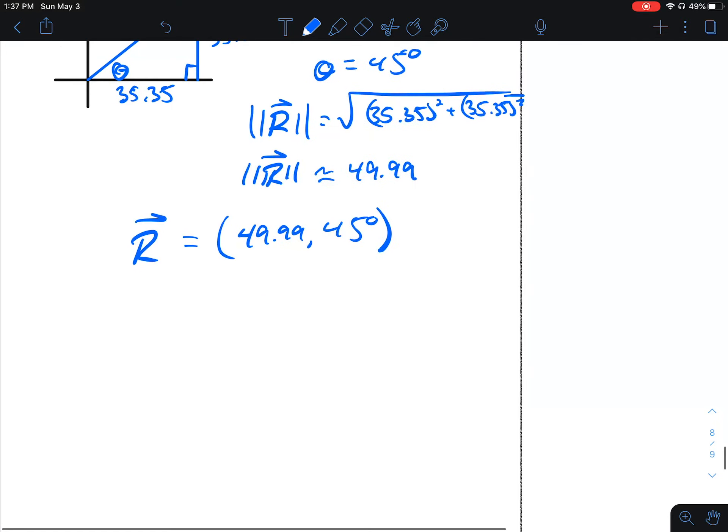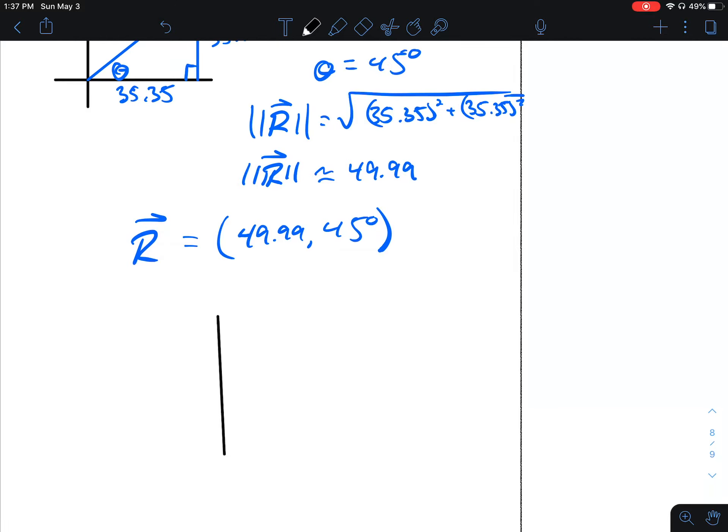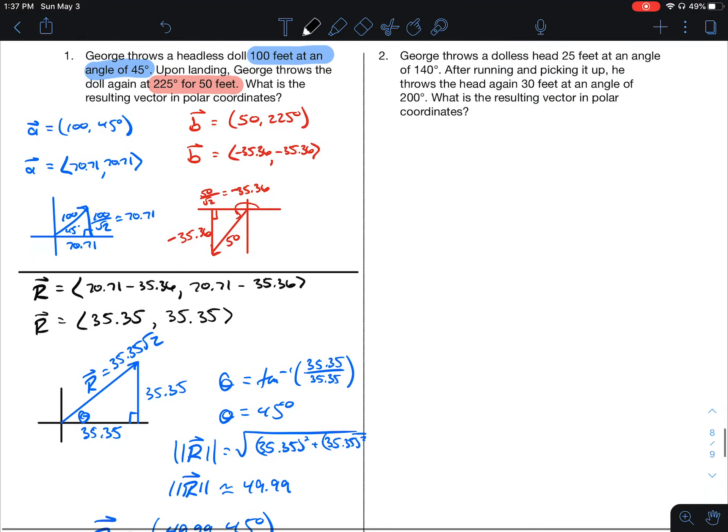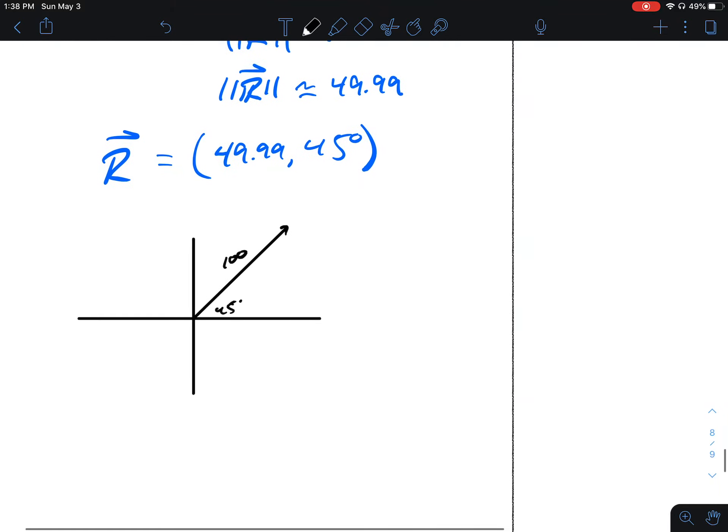Let me explain what happened. If we put this all in the same coordinate plane, we had vector A with a magnitude of 100 at 45 degrees. Then we had vector B with half that magnitude, and it was going in the exact opposite direction.